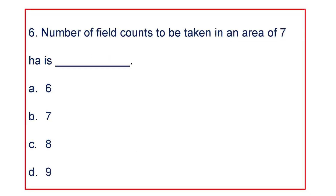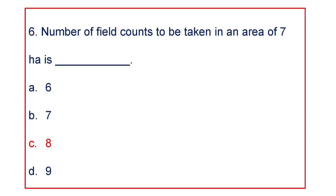Next question: Number of field counts to be taken in an area of 7 hectares is A. 6, B. 7, C. 8, or D. 9. The answer is 8 counts.